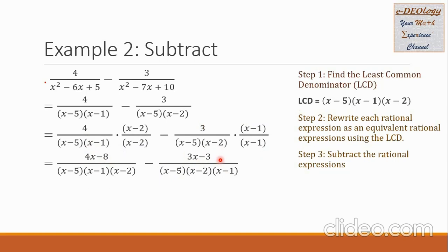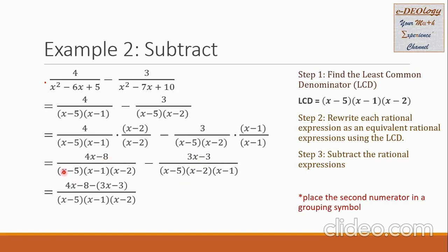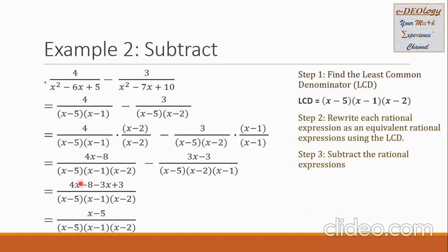Step 3: subtract the rational expressions. We now have two expressions with a common denominator, so we combine the numerators. We write (4x − 8) minus (3x − 3), putting the second numerator in a grouping symbol. Removing the grouping symbol changes the signs inside: negative 3x and positive 3. Combining like terms: 4x − 3x = x, and −8 + 3 = −5, giving x − 5 in the numerator.